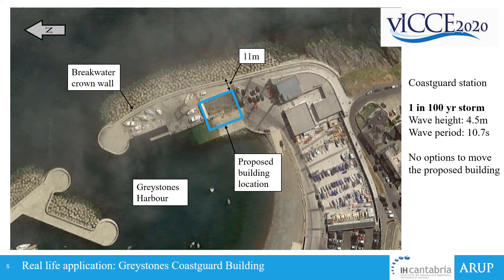The project we're considering for this presentation is the Greystones Coast Guard building, which was a new building to be built behind an existing breakwater. As you can see from the picture, there's very little room to move the building further away from the crest of the breakwater, which would have been our first approach to mitigate this problem of wave overtopping.